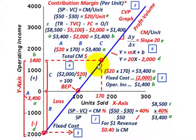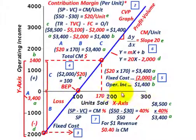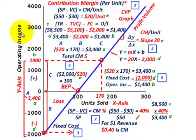The idea is that if you have a certain product you're selling and you increase the units that you sell, you're going to generate a greater operating income. Along our x-axis this is going to be the units sold, starting from 0 to 300. Along our y-axis that's our operating income, and that would be an increasing amount as well.